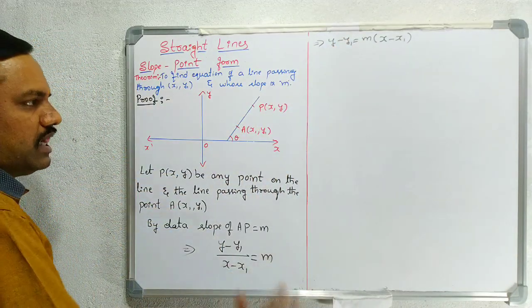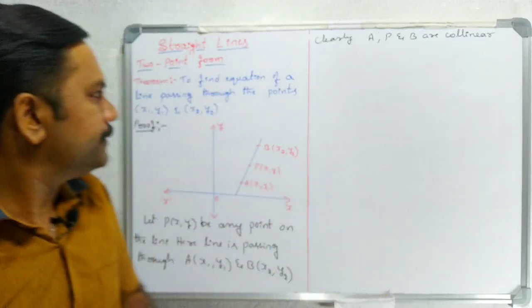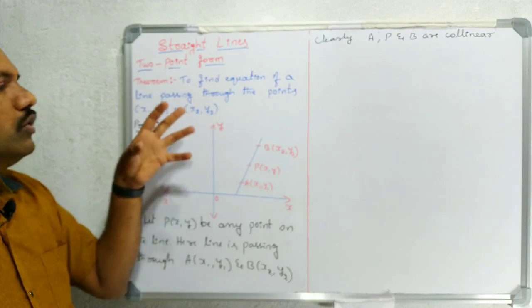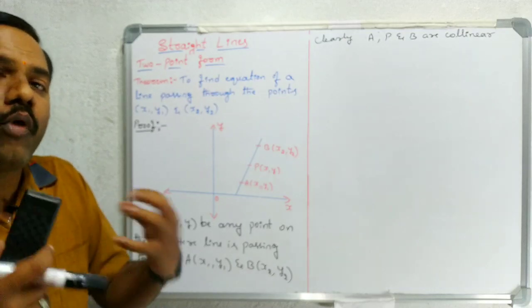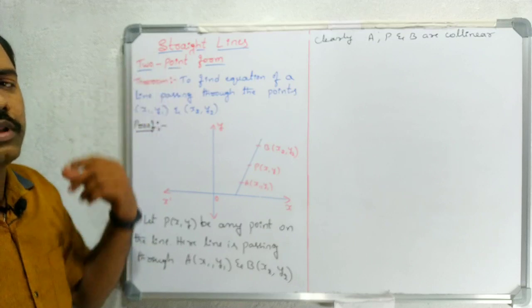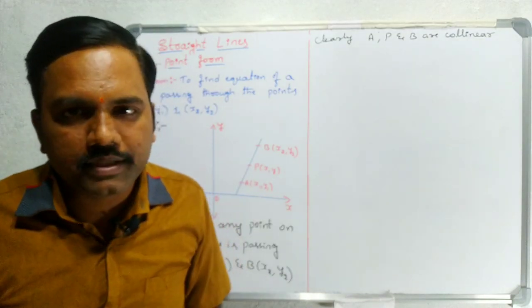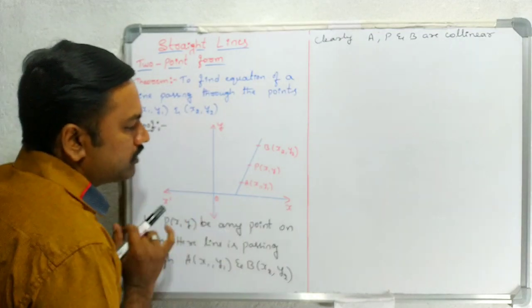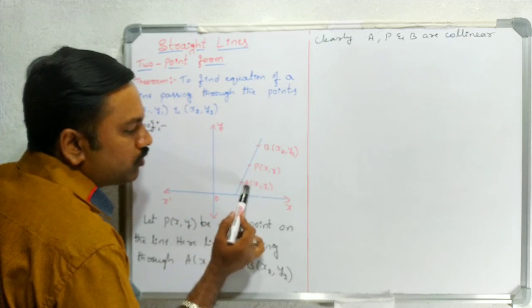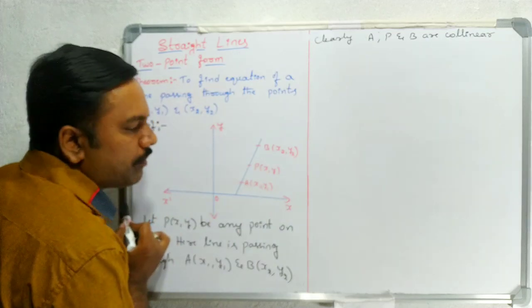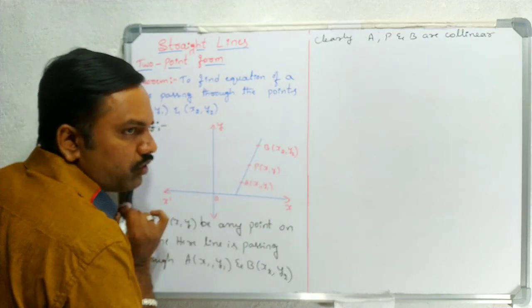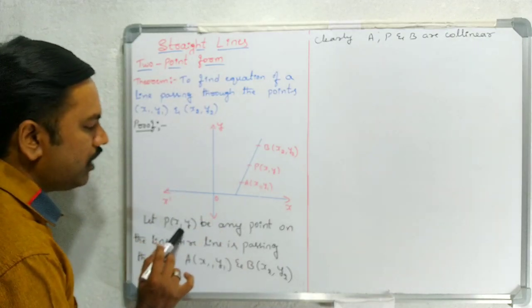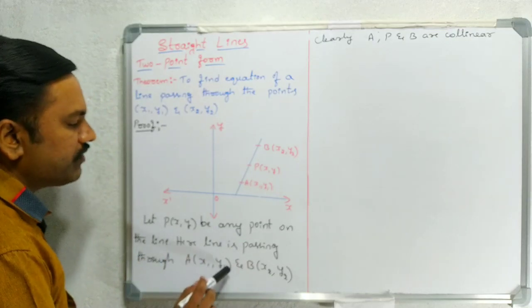The next one is to find the equation of a line passing through the two points (x1, y1) and (x2, y2). Here we have two known points and the line passes through them. Now observe the figure: the line is passing through two points — the first point is A of (x1, y1) and the second one is B of (x2, y2). Let P of (x, y) be any point on the line.